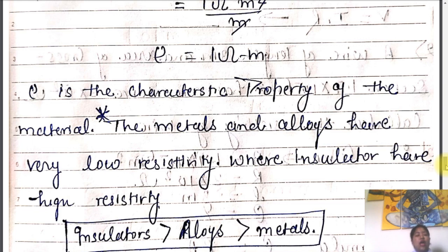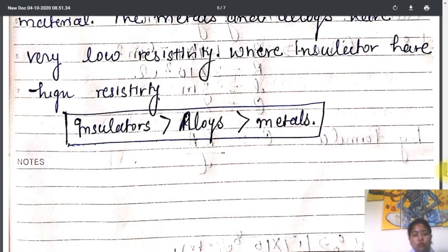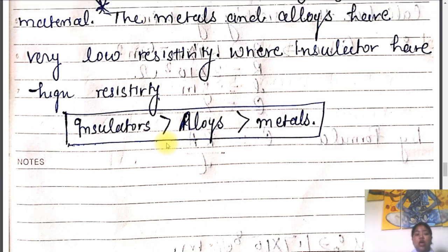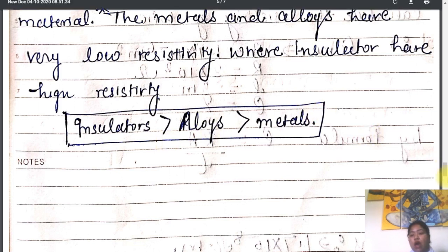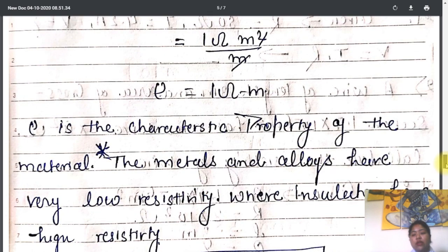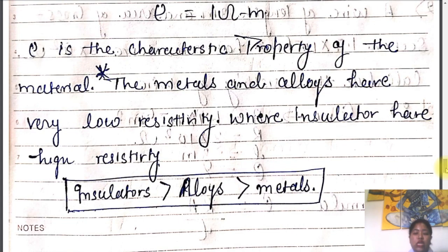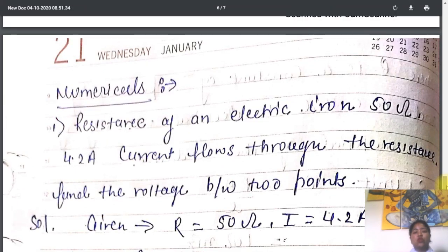Rho is the characteristic property of the material — it gives the resistance per unit length. Metals and alloys have low resistivity, whereas insulators have high resistivity. Because of high resistivity in insulators, there is much more obstruction in the flow of electric current, so insulators do not conduct electricity easily. We will talk about the application of electrical resistivity in our next class.